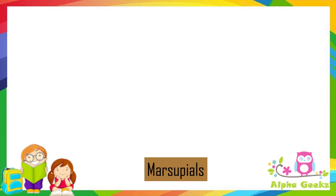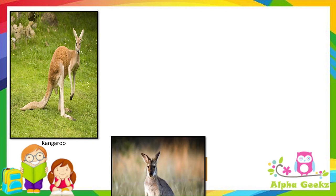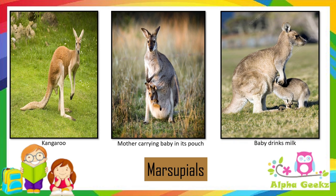Now let's look at marsupials. Marsupials are mammals that carry their babies in a pouch. The kangaroo is a marsupial — the baby kangaroo stays in its mother's pouch where it drinks its mother's milk.